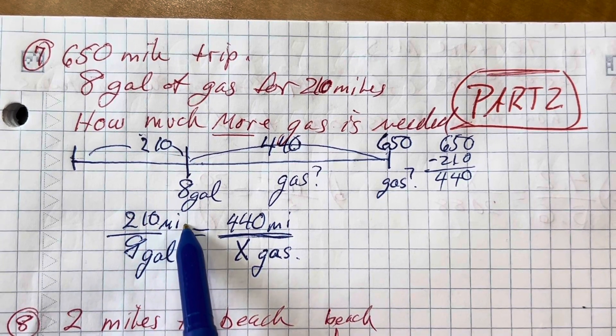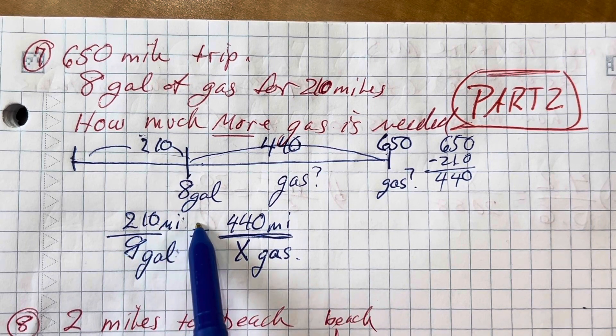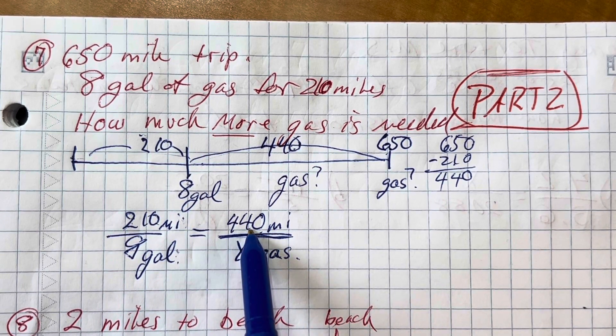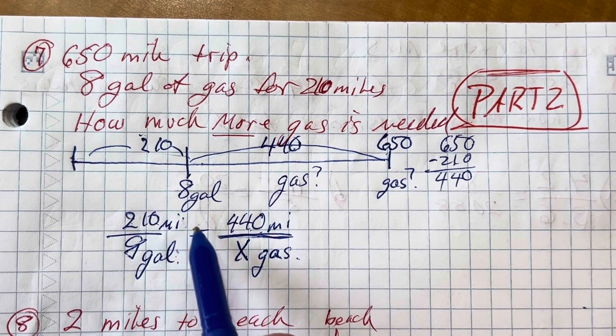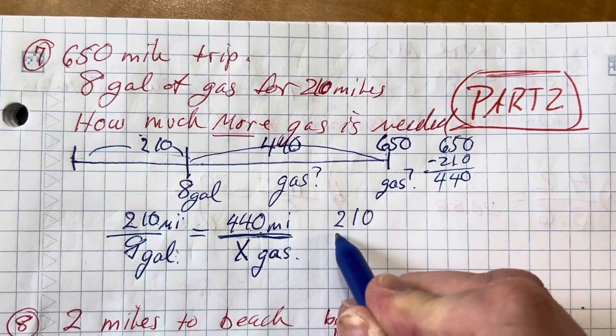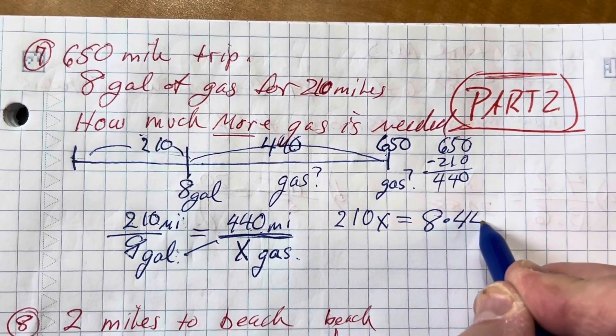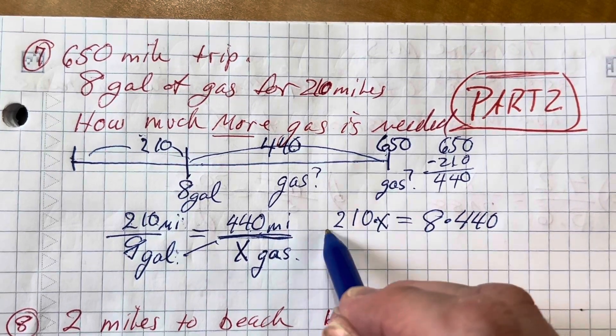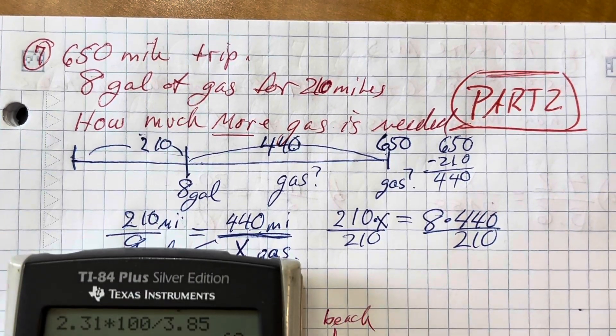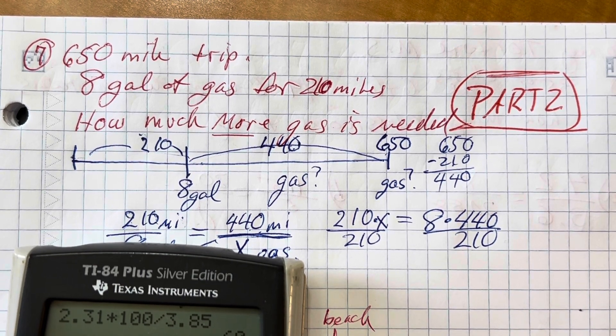Well, I can find a multiplier. I can multiply by two on both top and bottom. That would give me 420. That's not quite 440. Multiply by two point something would give me 440. I could try to figure that out. You know what I'm going to do? I'm going to just choose to use cross-products, cross-multiplication. I'll use 210x equals 8 times 440. All I have to do now is divide by 210.